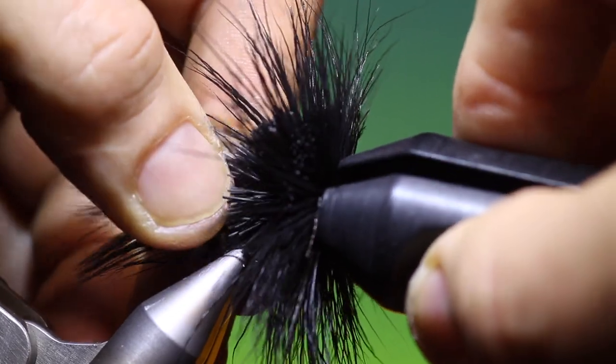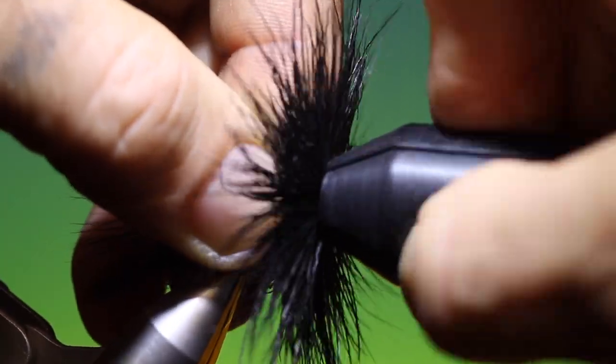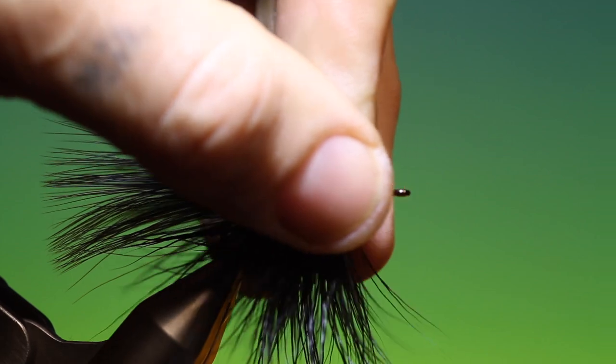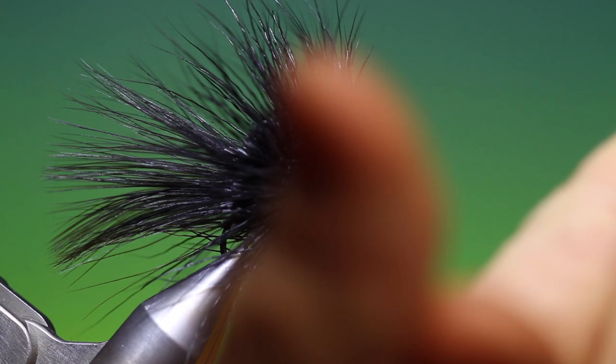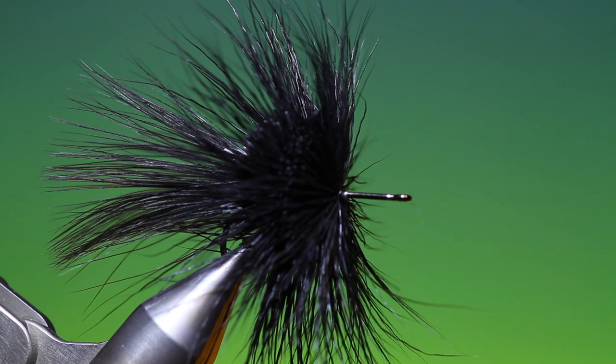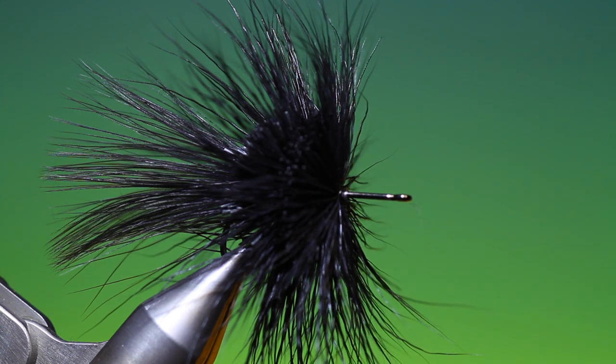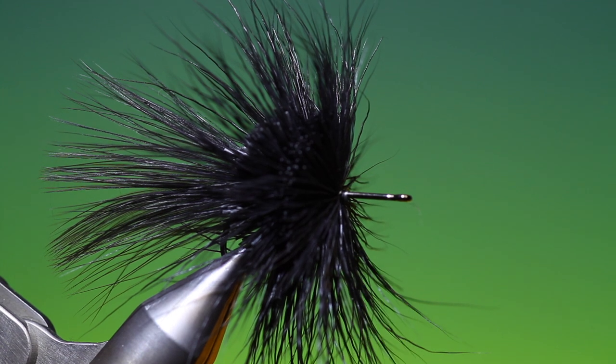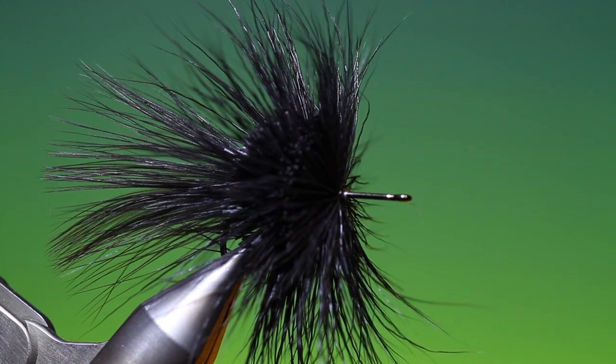Now holding at the base of the tail I can take my hair packer. Now it's important when you pack you twist a little from side to side. This will push the deer hair in between each other. And we carry on just like that until we get to the hook eye.